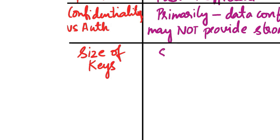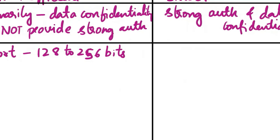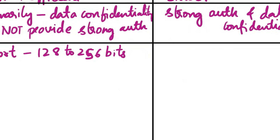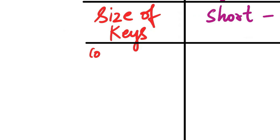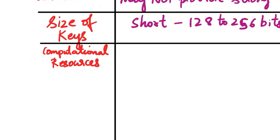The next aspect is size of keys. In symmetric cryptography, keys are relatively short, typically 128 to 256 bits. In asymmetric cryptography, keys are longer, typically 2048 bits or more, for strong security.